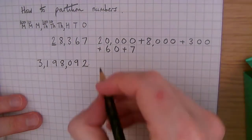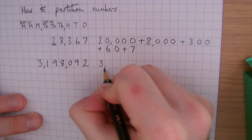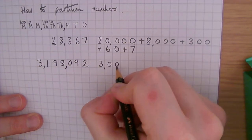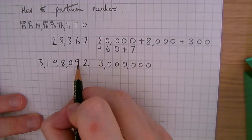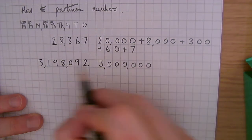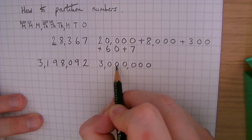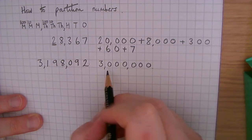Three million. So we're going to make sure that we get the correct number of zeros: one, two, three, four, five, six. I've got my commas in the correct place.